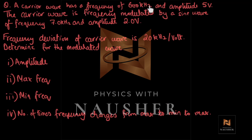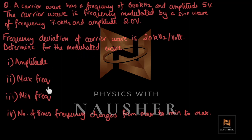A carrier wave has a frequency of 600 kHz and amplitude 5V. When you're reading this question, make the diagrams individually so you can visualize what's happening. The carrier wave is frequency modulated by a sine wave — the message signal — of frequency 7 kHz and amplitude 2V. The frequency deviation of the carrier wave is 20 kHz per volt. Determine for the modulated wave: the amplitude, the maximum frequency, the minimum frequency, and the number of times frequency changes from maximum to minimum to maximum. I suggest you pause and try it.